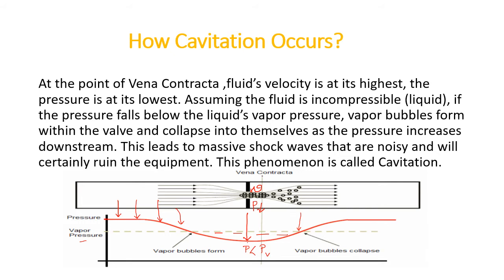There are several terms associated here: number one, Vena contracta; number two, vapor pressure; number three, the equation of continuity; and number four, Bernoulli's theorem. You need to go into detail to understand this completely. I would request every instrument design engineer, maintenance engineer, and asset integrity engineer to delve into this topic deeply.